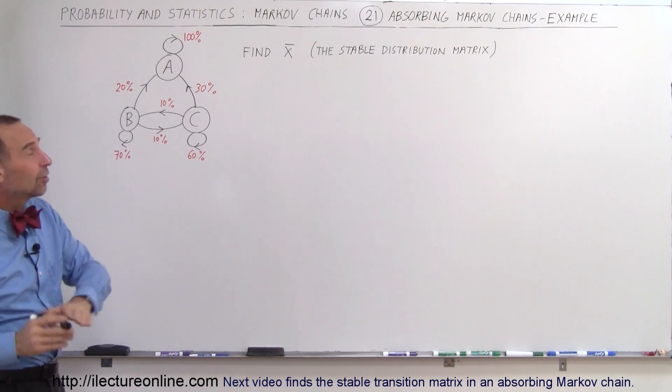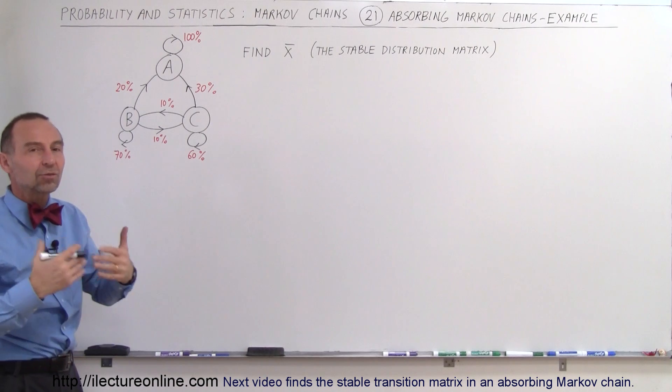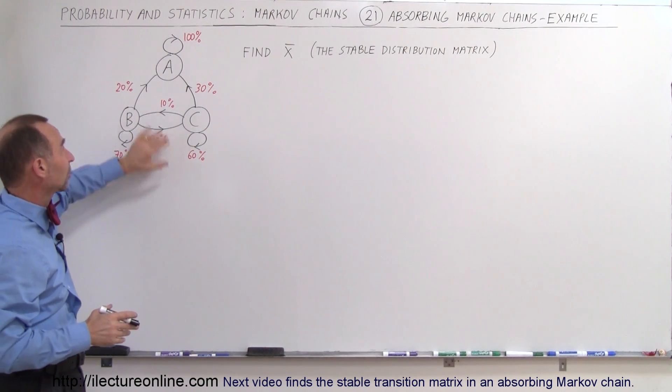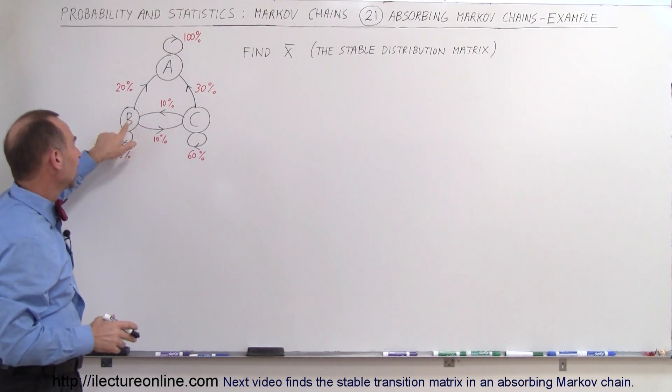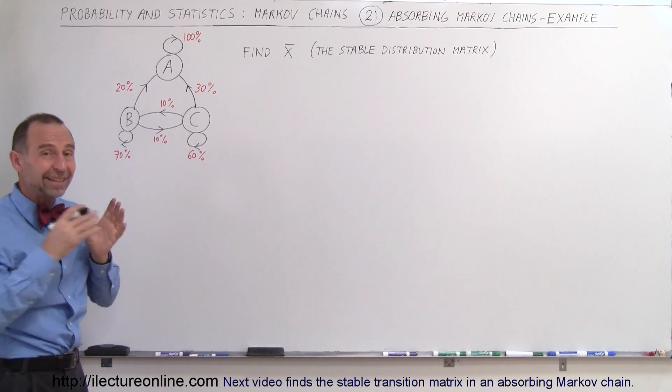So what we're trying to do here is find the stable distribution matrix. Where will the customers eventually end up? And of course you already know that 100% of customers will end up at A and none will end up at B and C. But will that be the case when we actually calculate it?